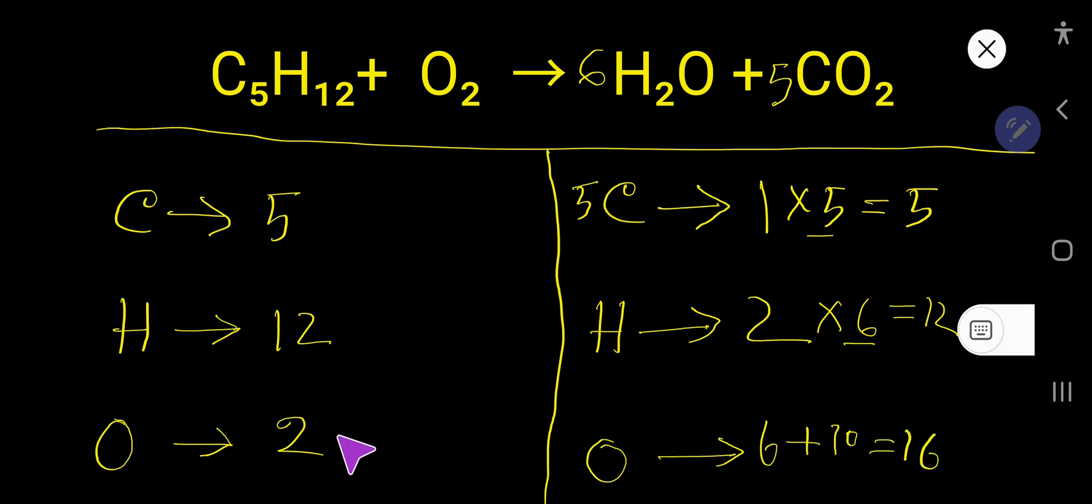But here you have 2 oxygen. To balance oxygen, you can multiply here by 8, that gives us 16. This 8 must come before this oxygen. So this oxygen has come from here. So place here 8, right?